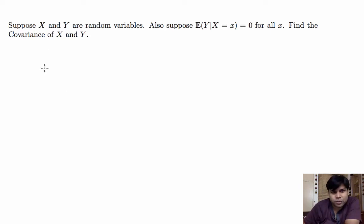Hi. In this video, we will solve the following problem. Suppose X and Y are random variables. We also suppose that expectation of Y given X equal to little x is 0 for all little x. And we want to find the covariance of X and Y.